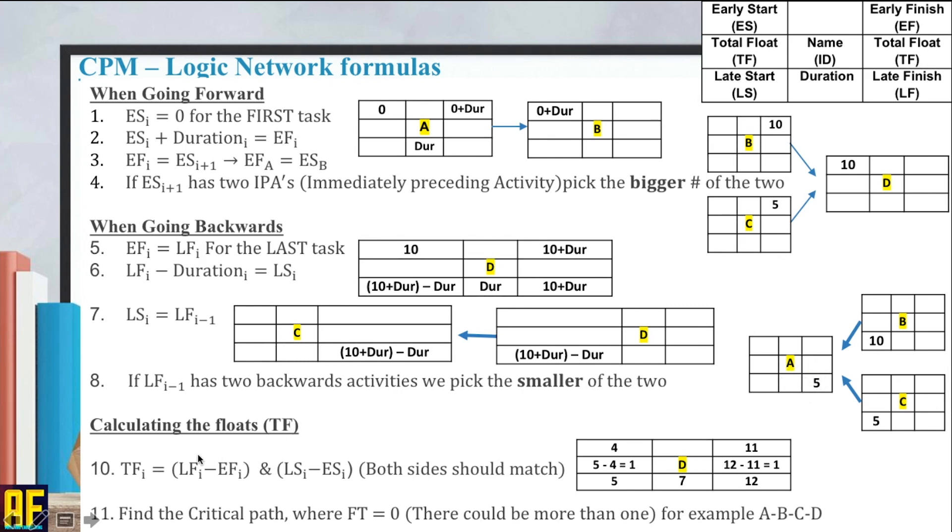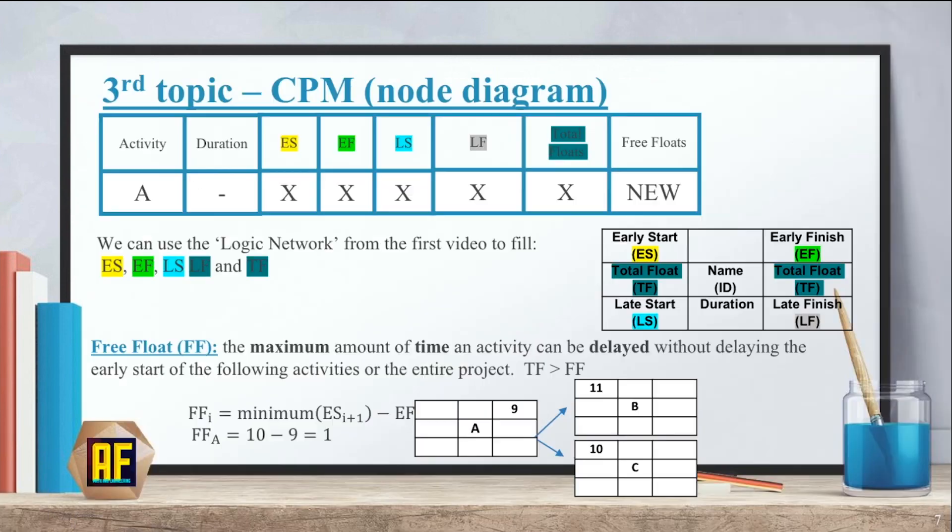When calculating the floats, we simply say that the total floats for an activity equals LF minus EF. LF minus EF and LS minus ES. Both sides should match. If they don't match, you probably made a mistake somewhere. Then once we get those, we find the critical path where the total floats equals zero. And remember that there could be more than one.